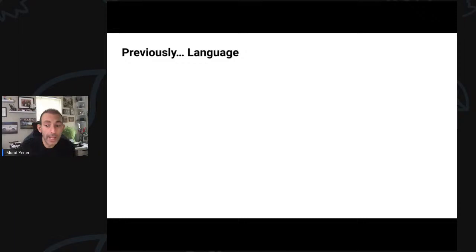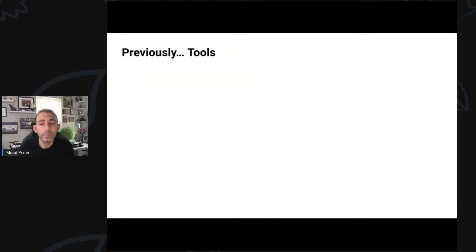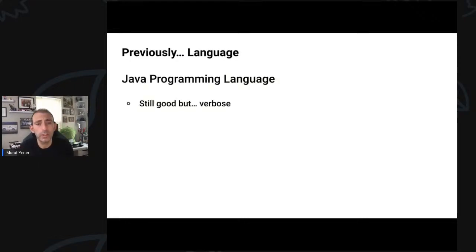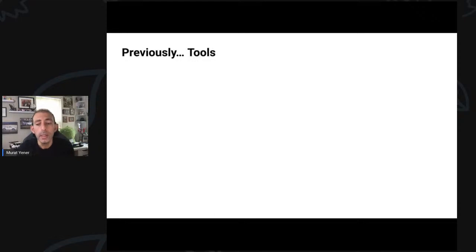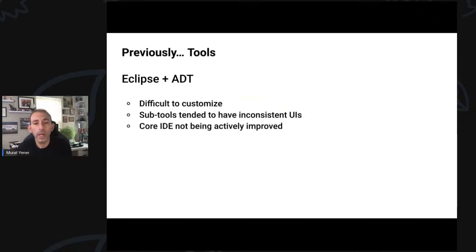These classical approaches introduced some classical problems. First, language: Java programming language, while widely used and loved, also had its own difficulties. Modern language features were moving slow and we were not able to offer a less verbose language. On the tool side, Eclipse and ADT were difficult to customize, and different sub-tools had inconsistent UI. So it didn't offer a very good developer experience. Also, we were not involved in the core IDE development, so we didn't get everything we needed for moving Android tools forward.